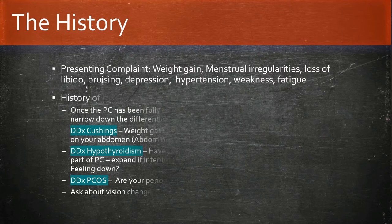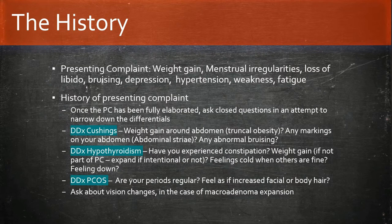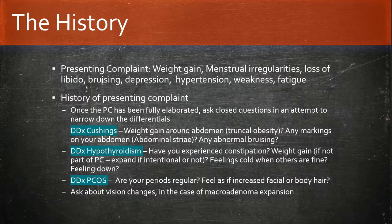Once the presenting complaint is elaborated, we move on to the history of presenting complaint to narrow down differentials. With Cushing's syndrome as a differential, ask about specific weight gain around the abdomen and skin changes such as bruising. Remember that striae is a very late sign, so it's not always present, especially in mild or early Cushing's syndrome.